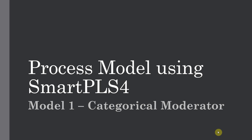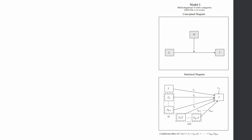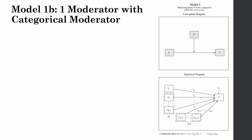In this session we are going to look into how to use Process in SmartPLS4 with a categorical moderator when running a process model. You can have Model 1 — that is Hayes Model 1 — tested in the process model using SmartPLS4. Here is the conceptual and statistical diagram for Model 1 with a categorical moderator. The example variables are: one predictor X, one moderator W, and one outcome Y.